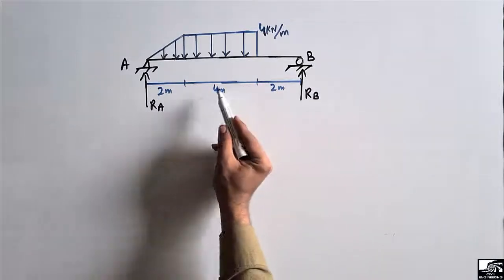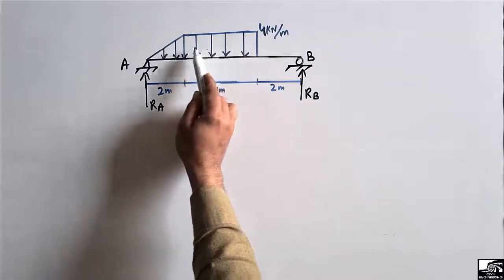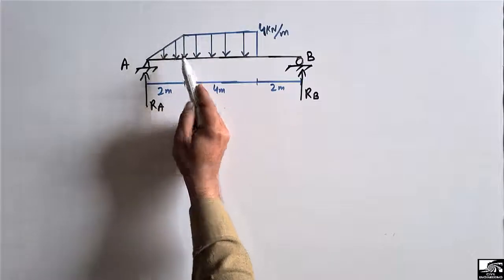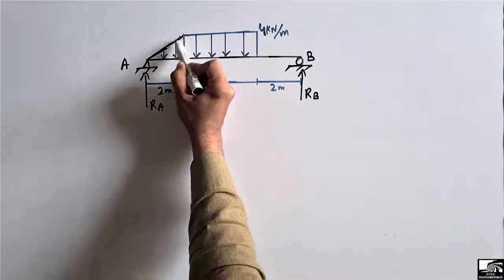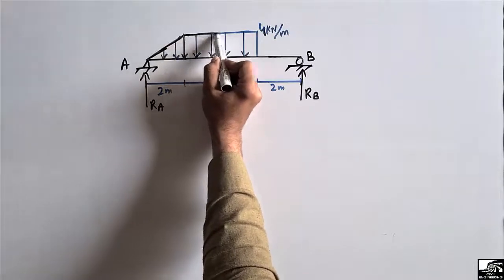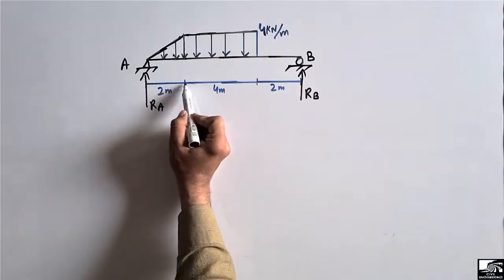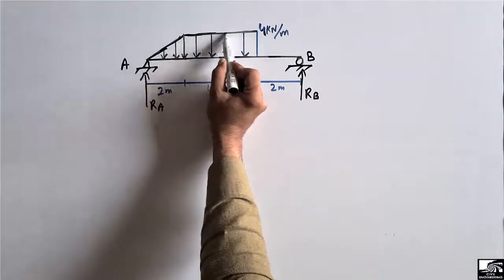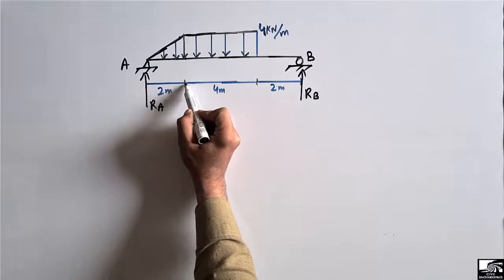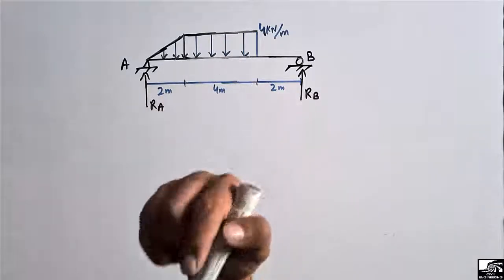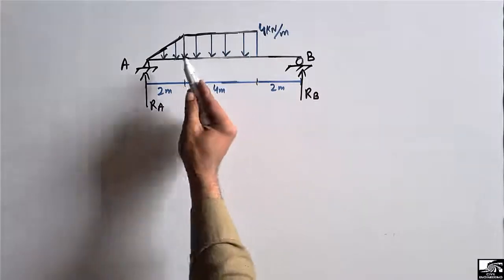To start finding the support reactions, we first have to calculate the concentrated load for each distributed load. This is a uniformly varying triangular load up to a distance of 2 meters, and then there is a rectangular load from 2 meters up to 4 meters.